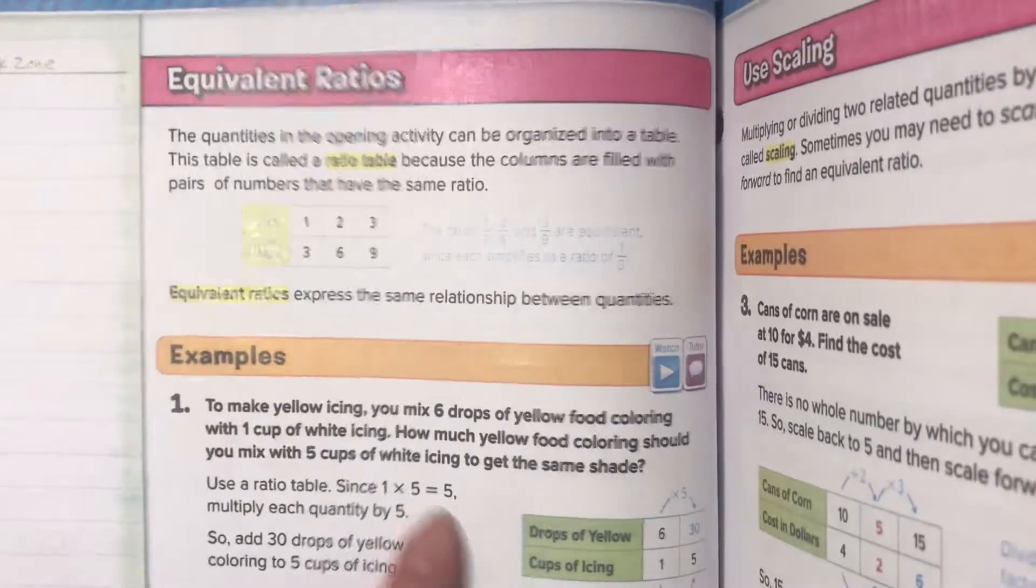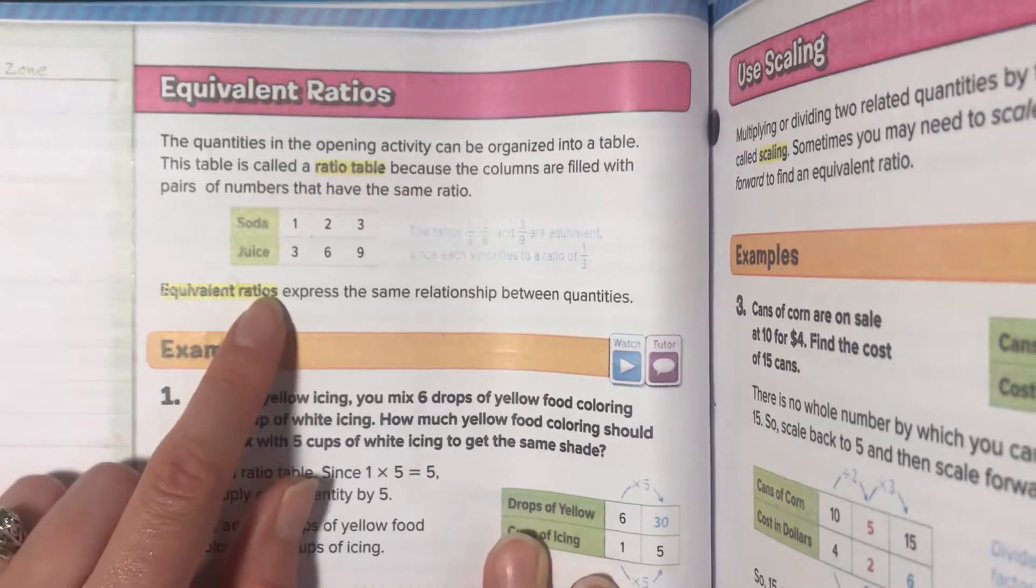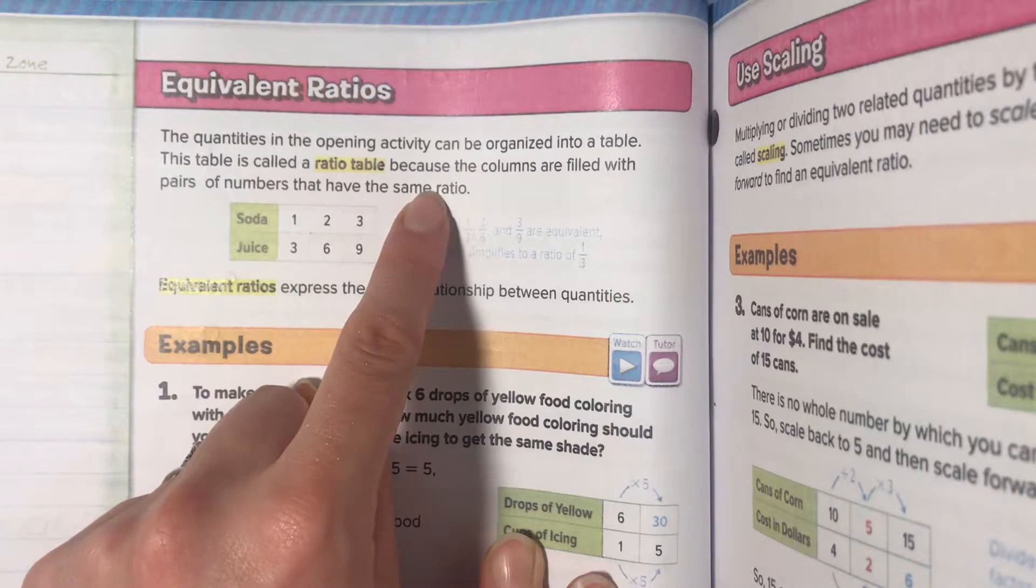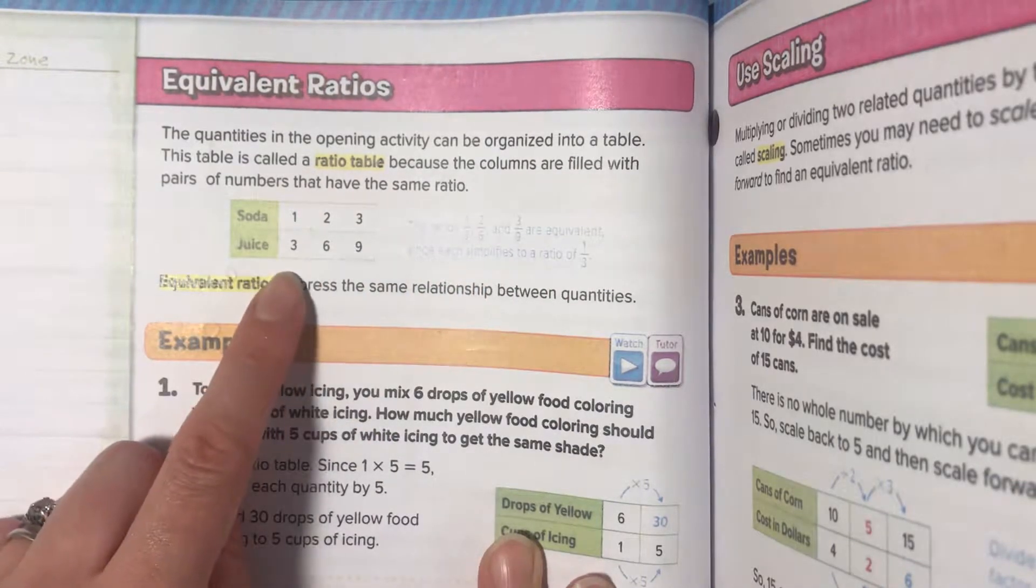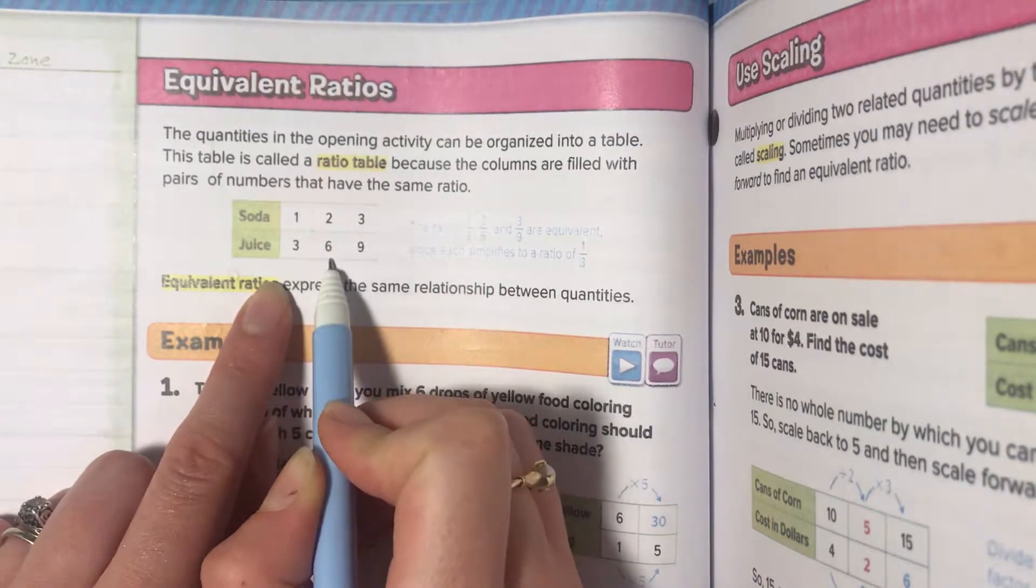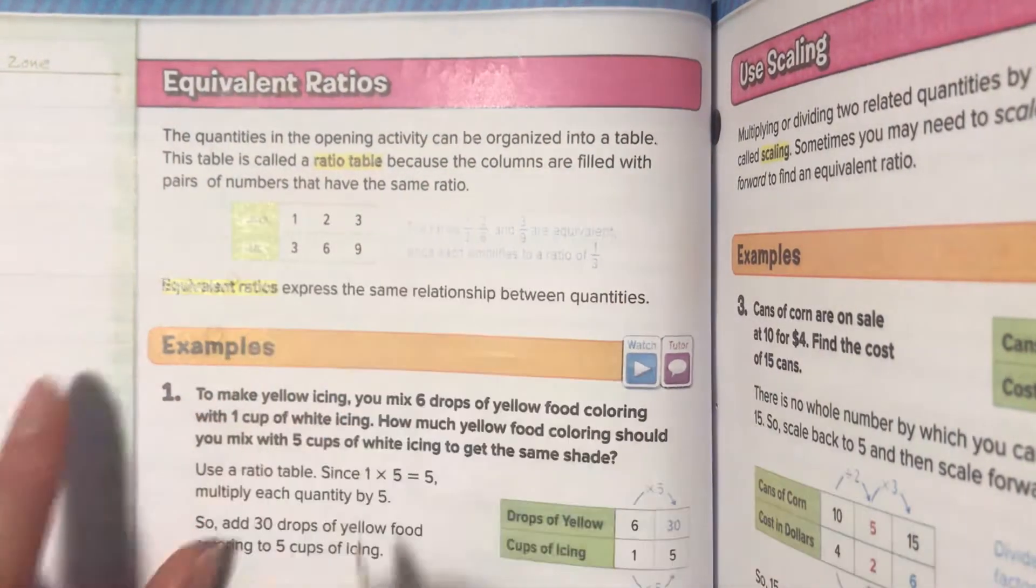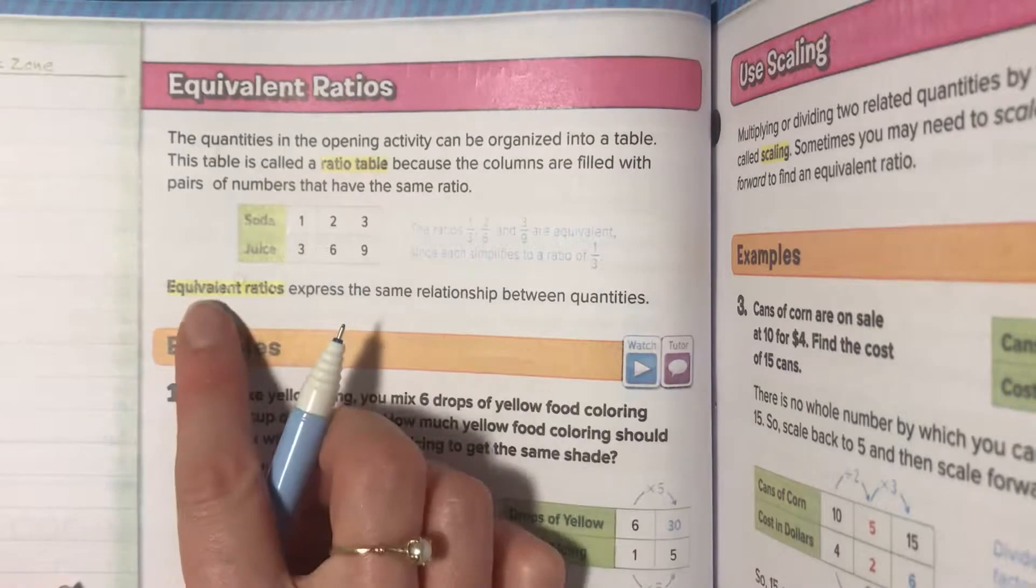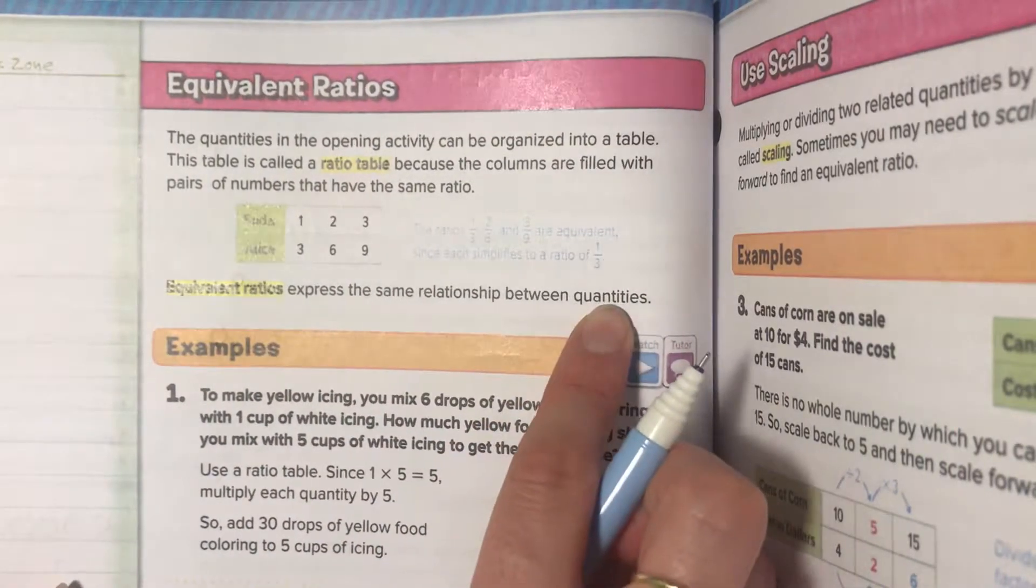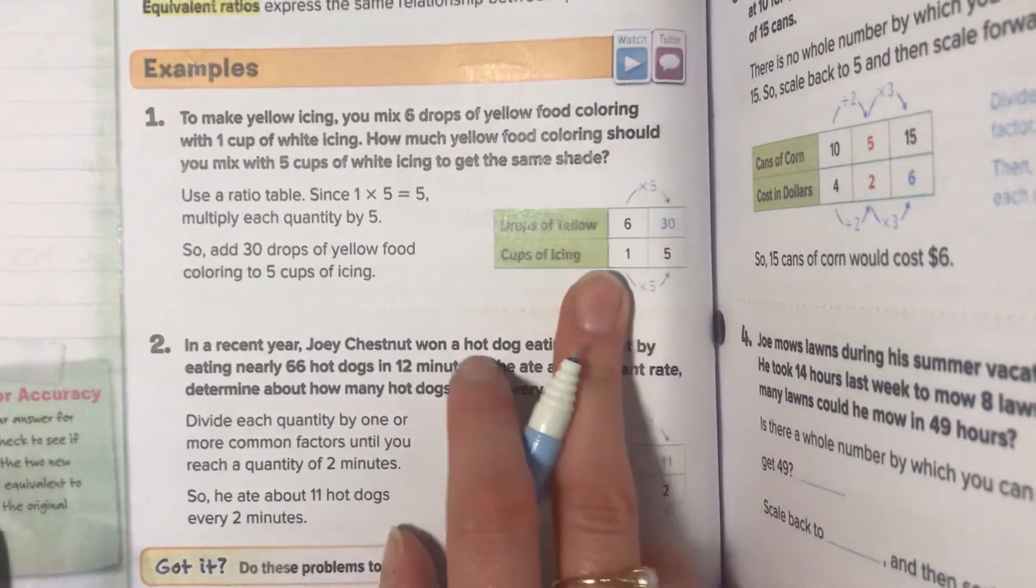Equivalent ratios. The quantities in the opening activity can be organized into a table. This table is called a ratio table because the columns are filled with pairs of numbers that have the same ratio. Remember we have one soda, three juices, two sodas, six juices, three sodas, nine juices. The ratio stays the same. Equivalent ratios express the same relationship between quantities. Let's look at the example problems now.